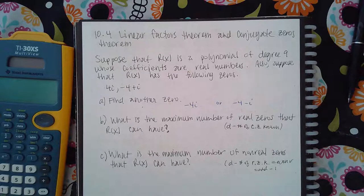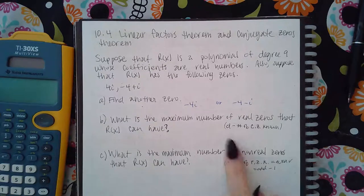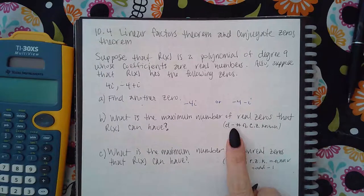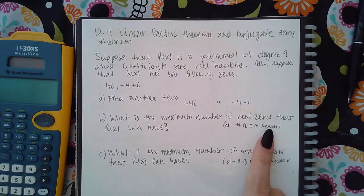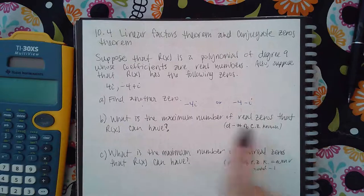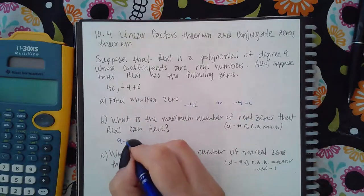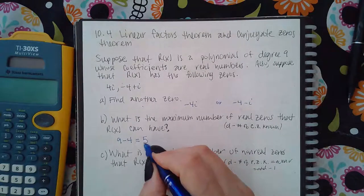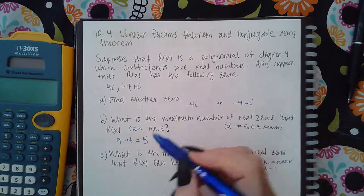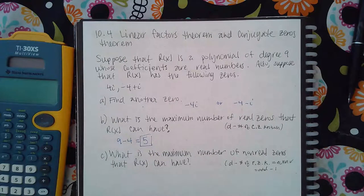What is the maximum number of real zeros that r(x) can have? Here's my hint: take the degree and subtract the number of complex zeros that you know about. I know that I have these two and these two. So 9 minus 4 equals 5. Five is the maximum number of real zeros that I could have.